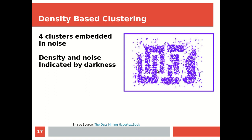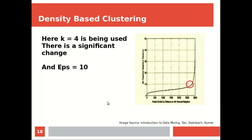Looking at example clusters embedded in noise, you can see dense regions and sparser regions. Density and noise are indicated by darkness — lighter regions are less dense, representing outliers and noise, while darker regions are more dense and form clusters. For a particular dataset, you compute the k-distance for every point, plot it, and observe a sharp change at the distance to the 4th nearest neighbor.